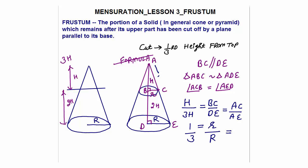If the slant height of the smaller cone is L, the slant height of the larger cone is 3L, so slant height is also in ratio 1:3. Whenever you extend a frustum to make a cone, the two triangles become similar and all corresponding dimensions — height, radius, and slant height — are in the same ratio.